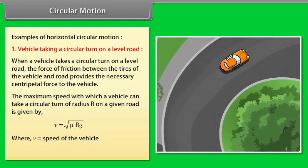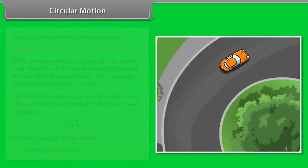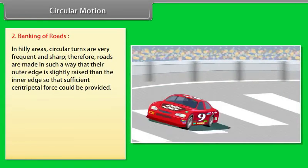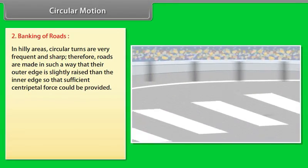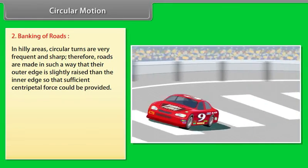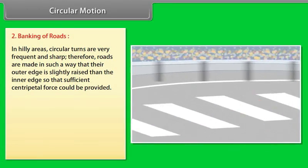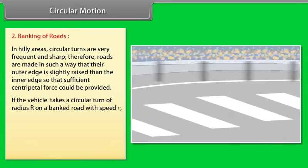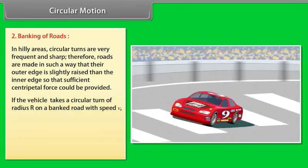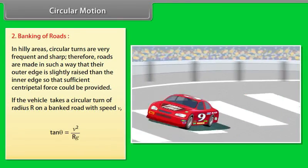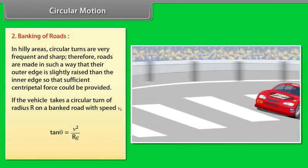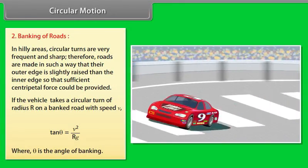Where V is the speed of the vehicle and μ is the coefficient of friction. Example 2 — Banking of Roads: In hilly areas, circular turns are frequent and sharp. Roads are made with the outer edge slightly raised than the inner edge so that sufficient centripetal force can be provided. If a vehicle takes a circular turn of radius R on a banked road with speed V, then θ = V²/(Rg), where θ is the angle of banking.